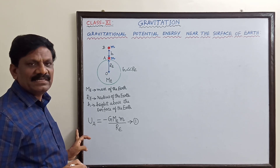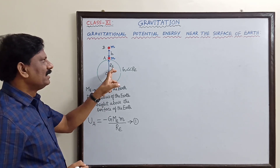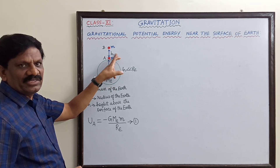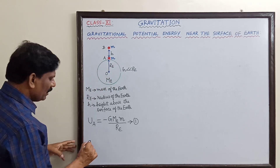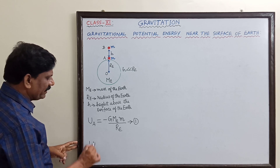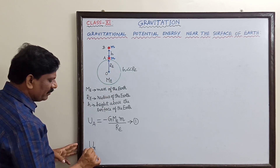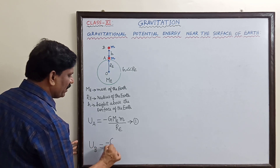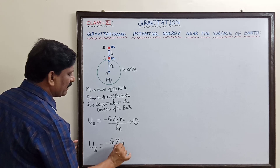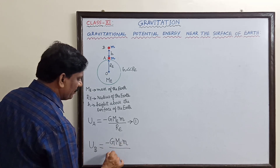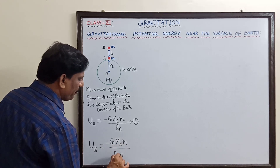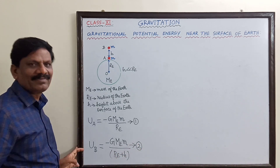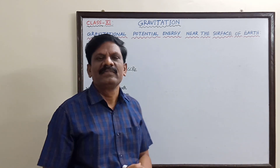Now if the mass is shifted to height h, its distance from the center of the Earth at point B is R_e + h. Therefore the gravitational potential energy of mass m at point B is U_B = −G·M_e·m / (R_e + h). This is equation two.